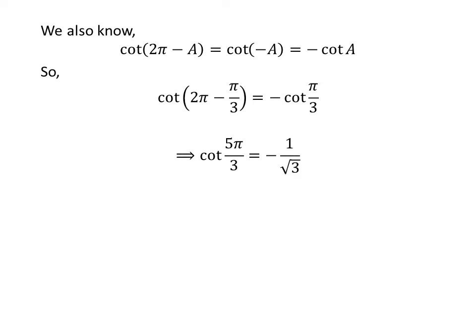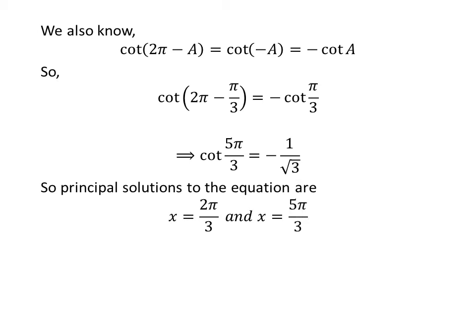Applying this identity as before, we get cotangent of 5 times pi upon 3 is equal to minus 1 upon square root of 3. So the principal solutions to the equation cotangent of x is equal to minus 1 upon square root of 3 are 2 times pi upon 3 and 5 times pi upon 3.